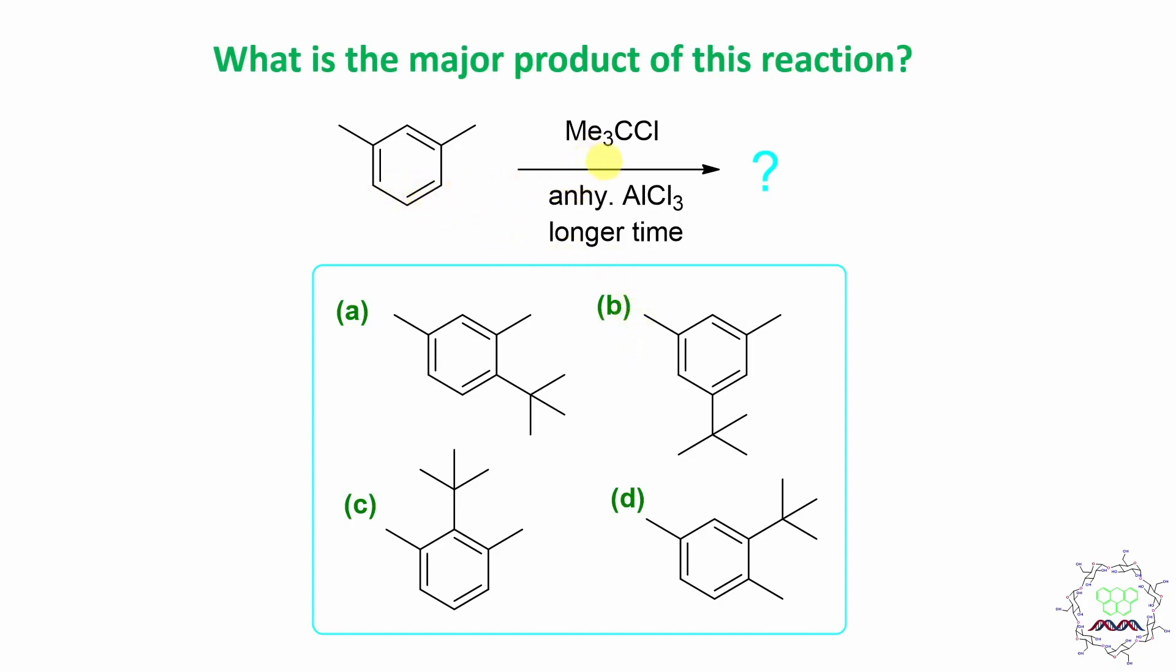If you look at the reagent, trimethyl chloride - I mean tertiary butyl chloride - it is actually a source of electrophile. Anhydrous AlCl3, this is nothing but Lewis acid.